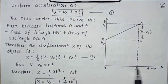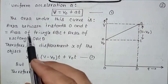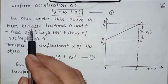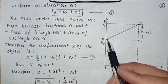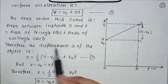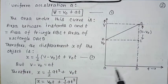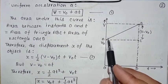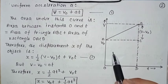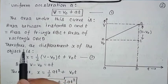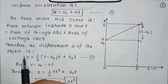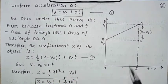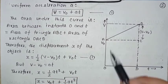The area between instants O and T — we calculate the area between instant O and T: area of triangle ABC, plus area of rectangle OACD. Therefore, displacement x of the object is determined.